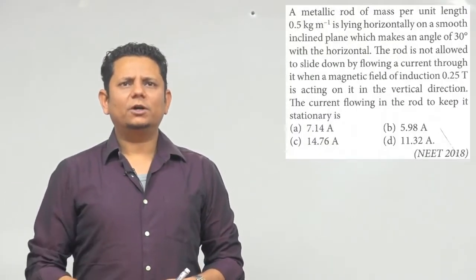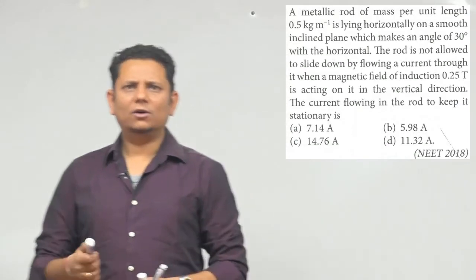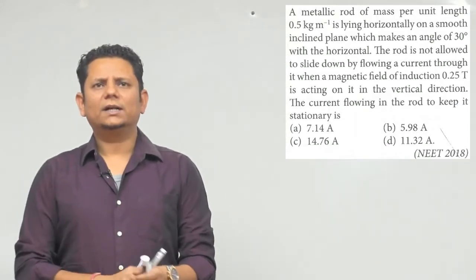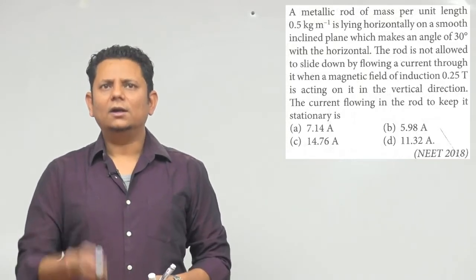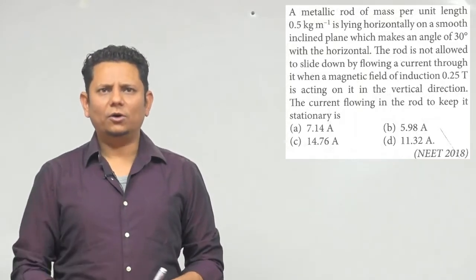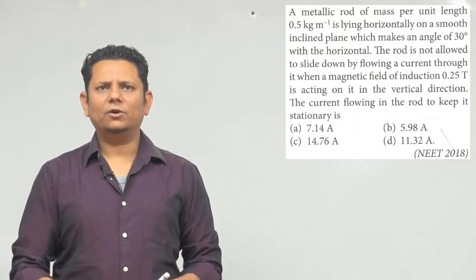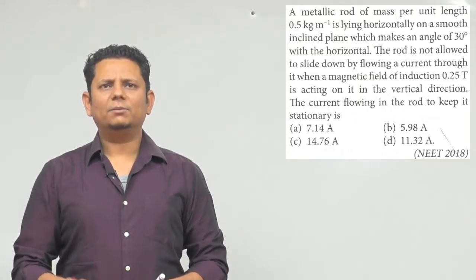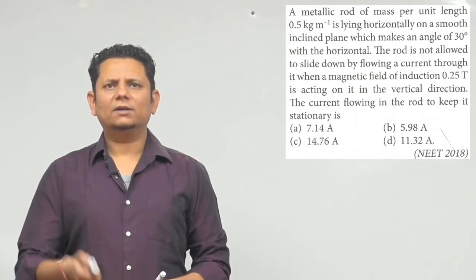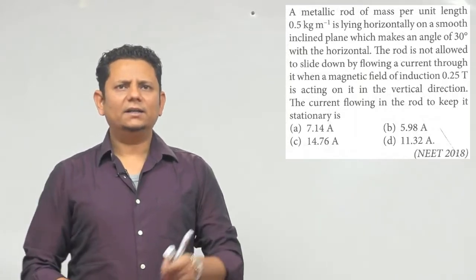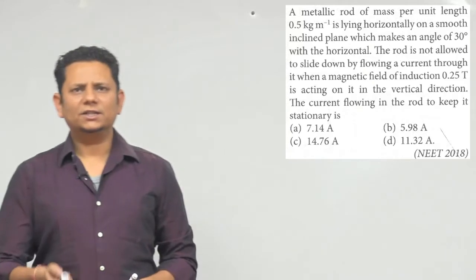Question C: A metallic rod of mass per unit length 0.5 kg per meter is lying horizontally on a smooth inclined plane which makes an angle of 30 degrees with the horizontal. The rod is not allowed to fall or slide down by flowing a current through it when a magnetic field of induction 0.25 tesla is acting on it in the vertical direction. The current flowing in the rod to keep it stationary will be...